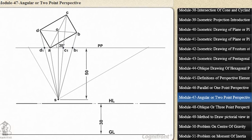Through S, draw lines parallel to AD and AB, cutting PP at points V1 and V2 respectively. Project V1 to V1 and V2 to V2 on HL. V1 and V2 are the vanishing points.